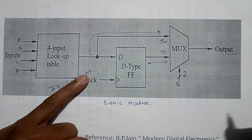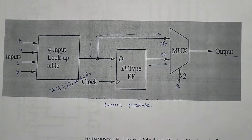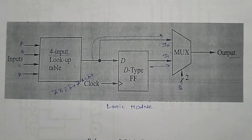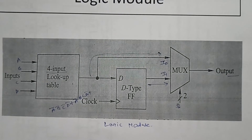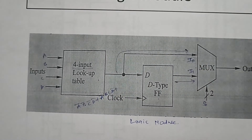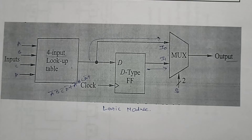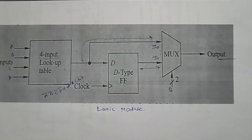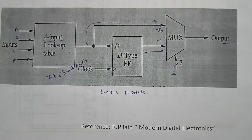The multiplexer uses a single select line to decide whether the output of the lookup table or the output of the D flip-flop should be connected to the final output. This is how the Field Programmable Gate Array works. In summary, the FPGA architecture contains configurable logic blocks, interconnects, IO blocks, and IC pins, where the configurable logic blocks consist of global interconnects and logic modules.